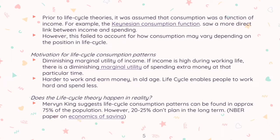Prior to life-cycle theories, it was assumed that consumption was a function of income. For example, the Keynesian consumption function saw a more direct link between income and spending. However, this failed to account for how consumption may vary depending on the position in the life cycle.